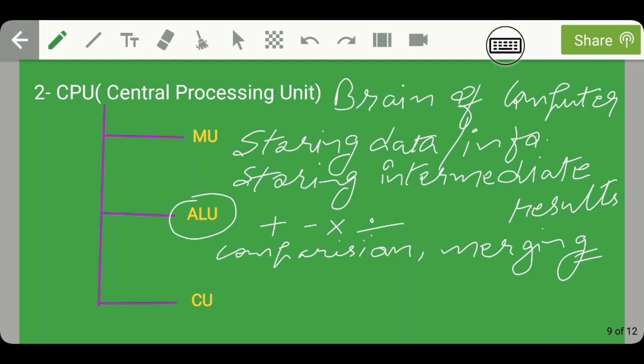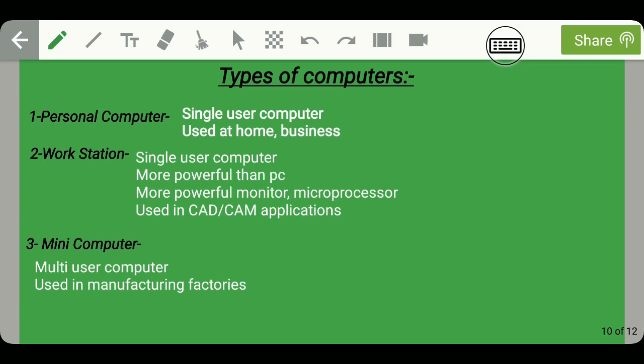The third component in the central processing unit is CU. The basic purpose of control unit is to generate control signals that are used by the CPU to activate the hardware components. For example, if we need to print something, then it takes some input and processes and gives some output.